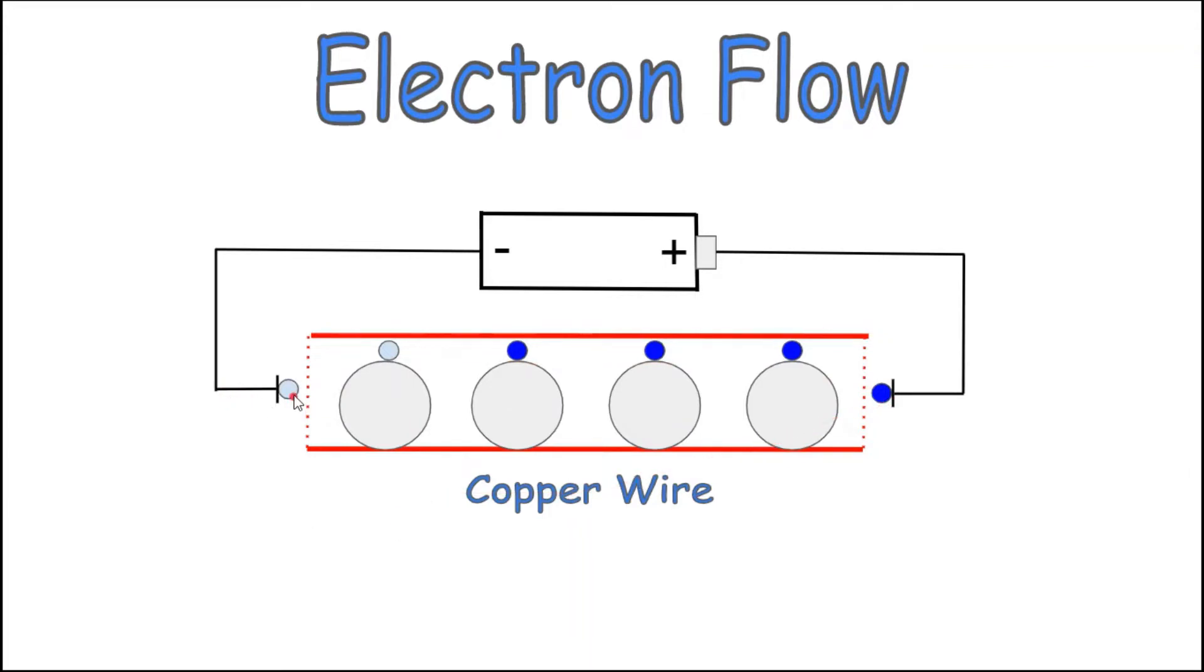Now you have another electron waiting to be pushed into the wire. Once it gets pushed in, it'll knock these electrons, this electron off, that one, that one, and then this one, until now you have two newly introduced electrons in the wire and you have displaced two over here.